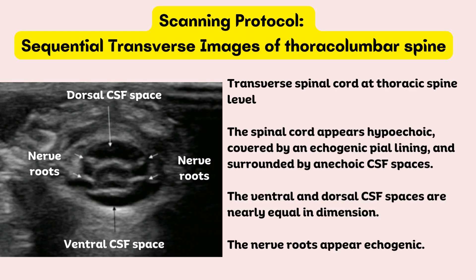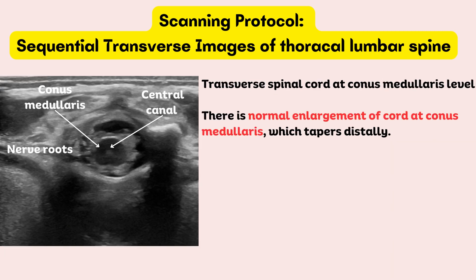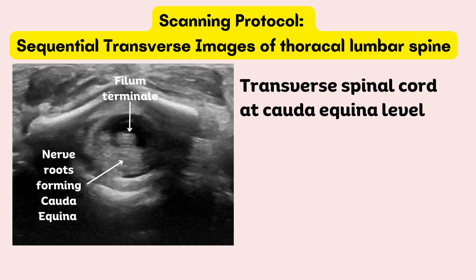On the transverse plane, sweep from the mid-thoracic region to the sacrococcygeal region, taking sequential transverse images of the thoracolumbar spine. At the thoracic spine level, the spinal cord appears hypoechoic, covered by an echogenic pia lining, and surrounded by anechoic cerebrospinal fluid spaces. The ventral and dorsal CSF spaces are nearly equal in dimension, and the nerve roots appear echogenic. At the conus medullaris level, there is normal enlargement of the cord which tapers distally. At the cauda equina level the cord transitions into the nerve root bundle.